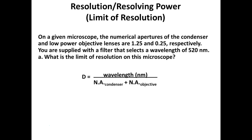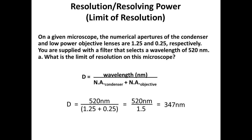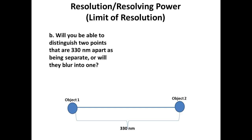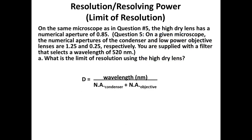In an example calculation, with given parameters we get a resolution of 347 nanometers — meaning that's as close as two objects can be and still be seen as separate. If two objects are 130 nm apart, we will not see them as separate because they're less than the resolution limit. Objects must be greater than 347 nm apart to be distinguished. At higher magnification, resolution also increases — with the next objective we might get 248 nm resolution.